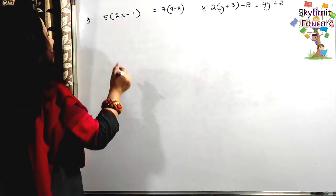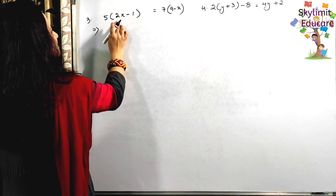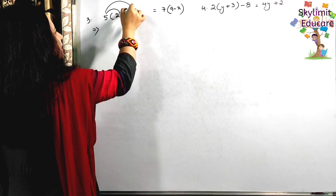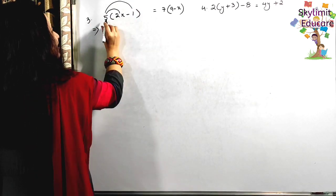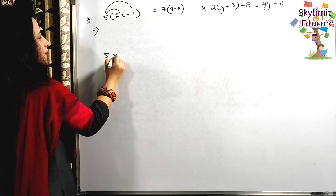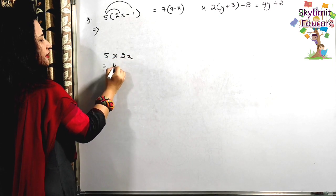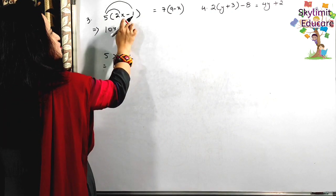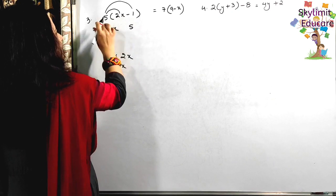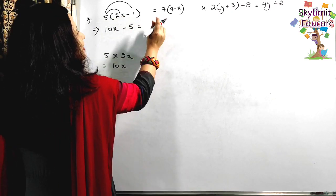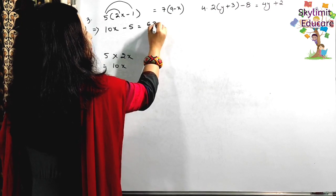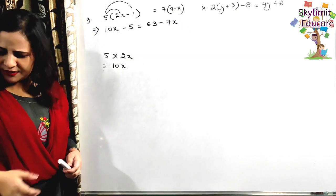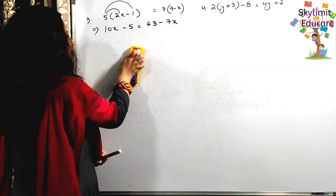Now let's come to the next question. On the left side you have 5 multiplied by (2x - 1). Follow the same procedure: first multiply 5 by 2x — that gives 10x — then multiply 5 by minus 1 — that gives minus 5. On the right side, 7 is multiplied to (9 - x): 7 × 9 = 63, and 7 × x = 7x with a minus sign, giving 63 - 7x.